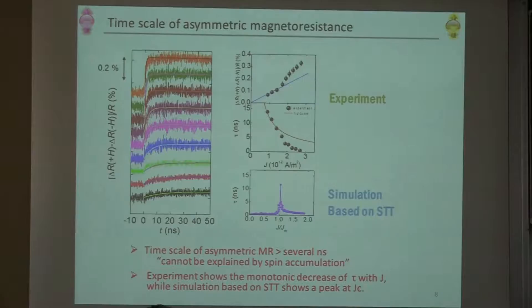Furthermore, this time scale shows monotonic decrease with current density, which cannot be explained by this STT simulation. In this case, you can see that this is a nanosecond regime time scale. But in our experiment, we need a longer 10 or 20 nanoseconds to get this effect.